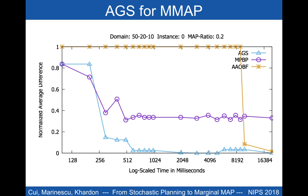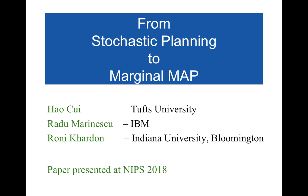Experiments in the paper show that AGS is competitive on hard inference problems. We compare AGS to AAOBF, a state-of-the-art any-time solver that, in the limit, finds an optimal solution. The experiments show that AAOBF works well when the summation portion is easy, but that AGS dominates when time is limited or when summation problems are hard. Please see the paper for more details on the analysis and full experimental results.